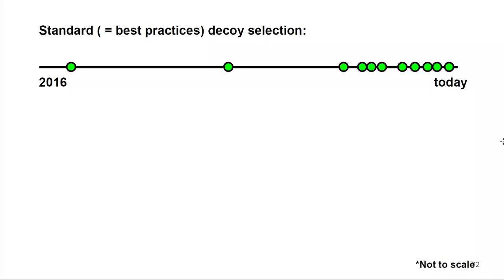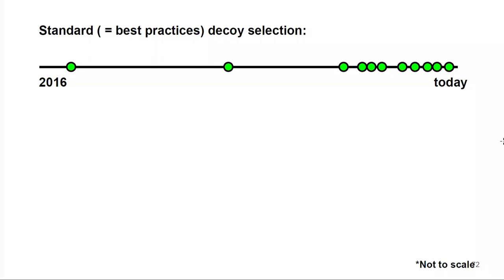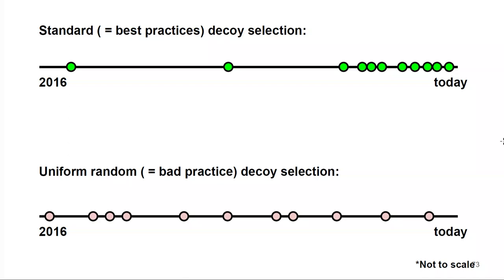Act 3 is egregious decoy selection. The standard best practice for selecting decoys is to pick several from recently, with a couple of longer ones further out. The logic is that most outputs churn relatively quickly — based on spend-time analysis of other chains — so you also want your decoys to be relatively recent, with some long tails so that if someone has to spend an old output, they have cover. It's really bad practice to use uniform random decoy selection, just picking 11 random numbers over the course of history.